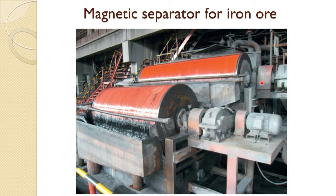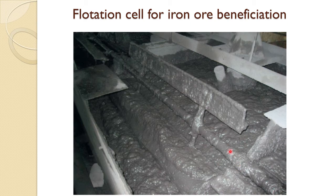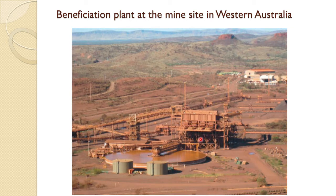This shows the view of iron ore mines — essentially hematite mines — and how the iron ore is mined and taken to a processing plant. This figure shows magnetic separation of iron ore using a low-intensity magnetic separator, where ore is attached to it and separated to make concentrate. Sometimes flotation is also applied — this is the flotation cell by which you increase the concentration of hematite or remove other impurities.